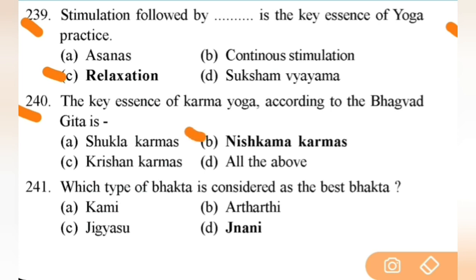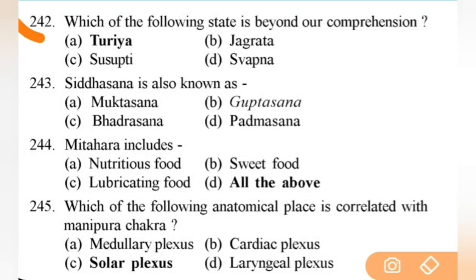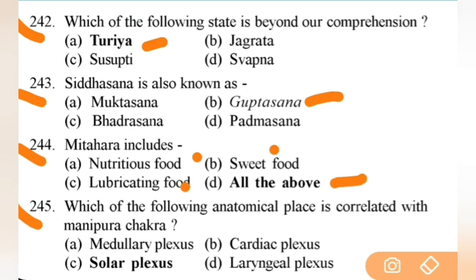Which type of Bhakta is considered the best? Right answer is Jnani Bhakta. Next: which of the following state is beyond our comprehension? Right answer is A — Turiya Avastha. Next: Siddhasana is also known as Guptasana. Next: Mitahara includes all of the above — nutritious food, sweet food, and lubricating food. Next: which anatomical place is correlated with Manipura Chakra? Right answer is C — solar plexus.